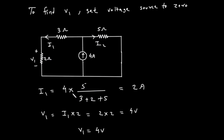The current divider formula says that the current in one branch, I1, is the total current — 4 amps — multiplied by the resistance of the other branch, 5 ohms, divided by the sum of the resistances of both branches, 5 ohms plus 5 ohms. So the equation is: I1 equals 4 multiplied by 5, all divided by 5 plus 5. This gives us 20 divided by 10, which means I1 is equal to 2 amperes.